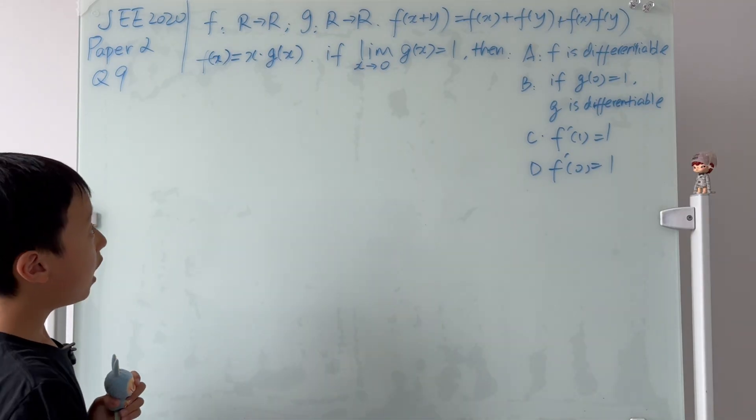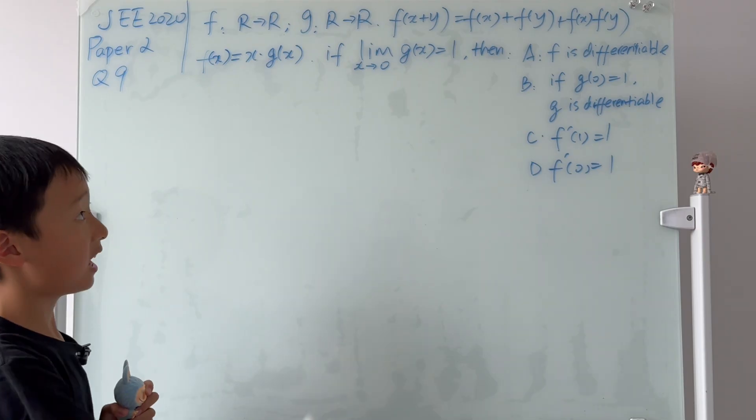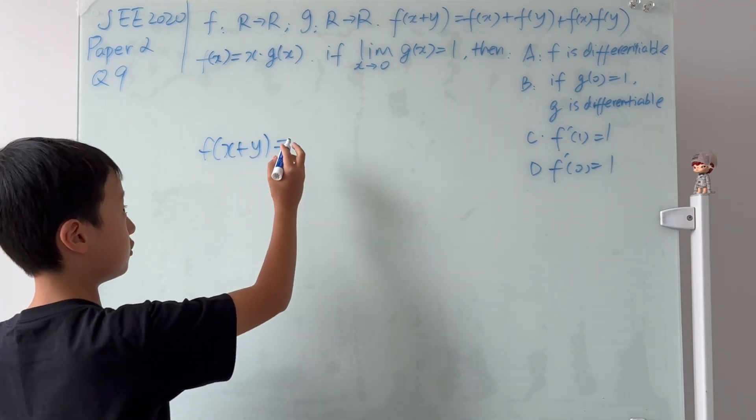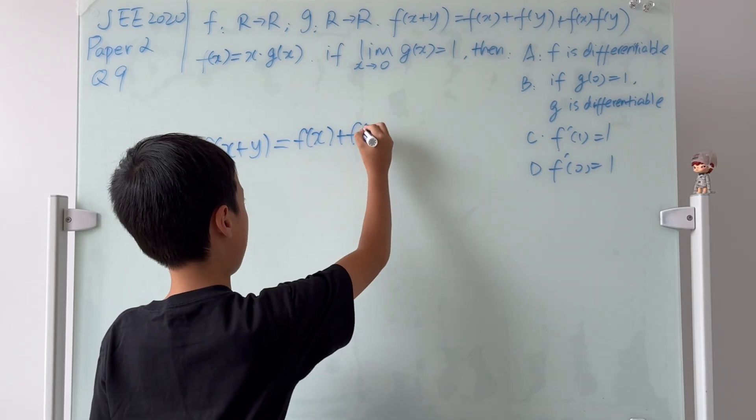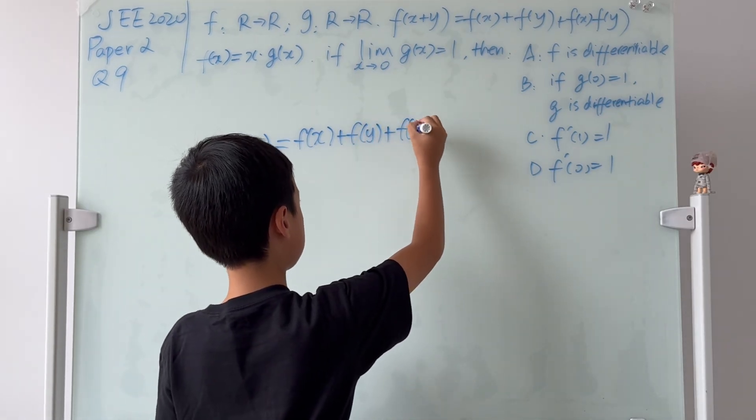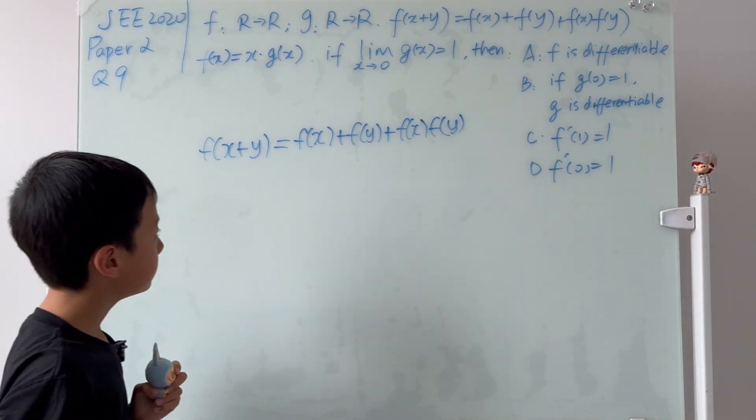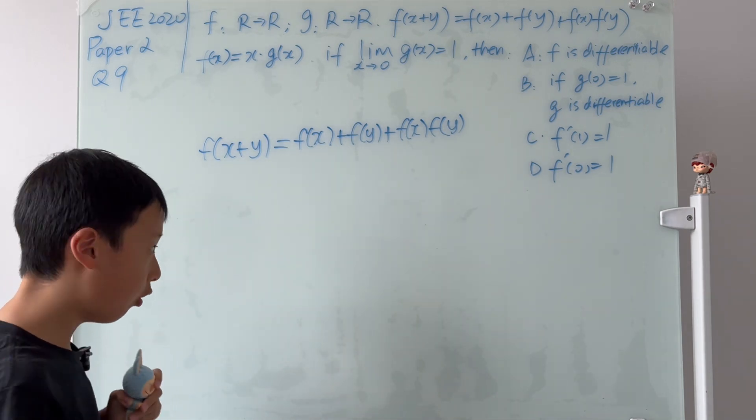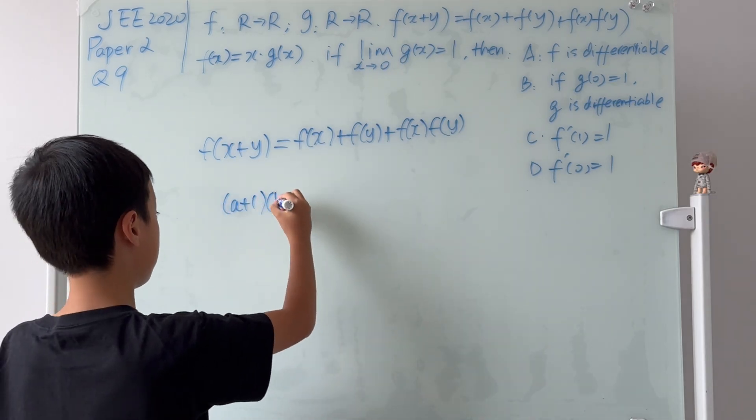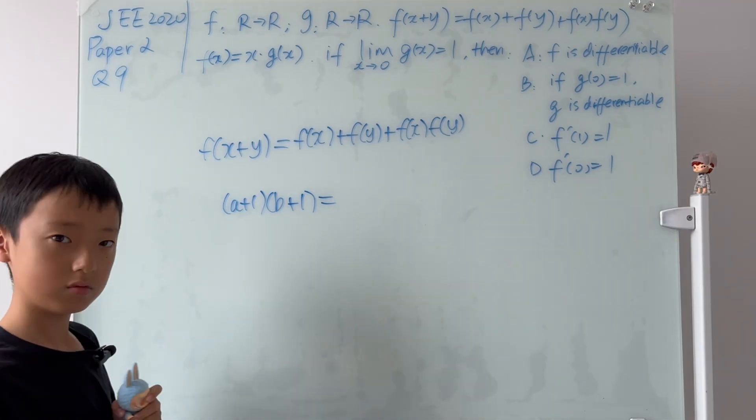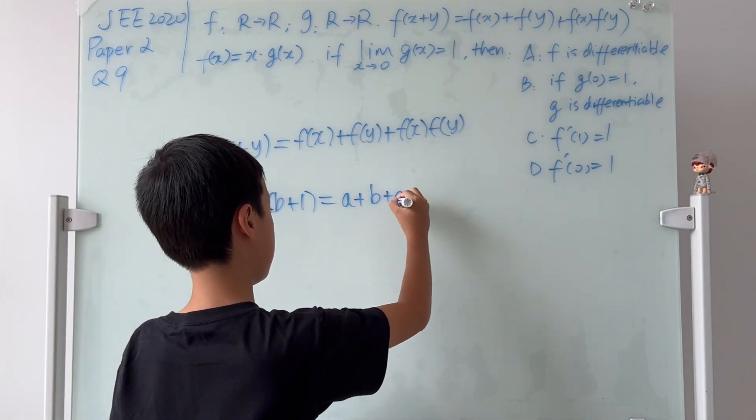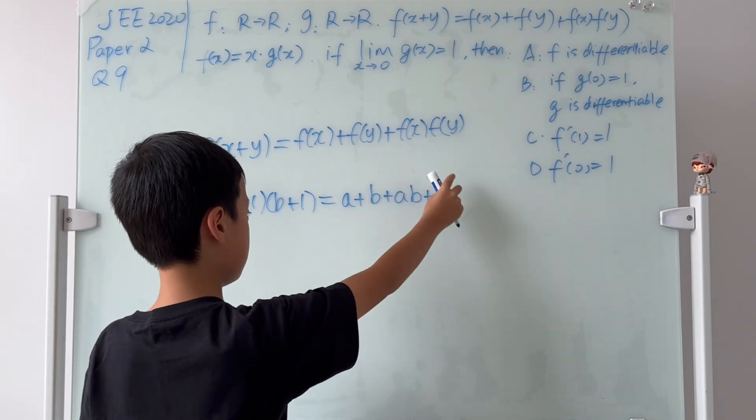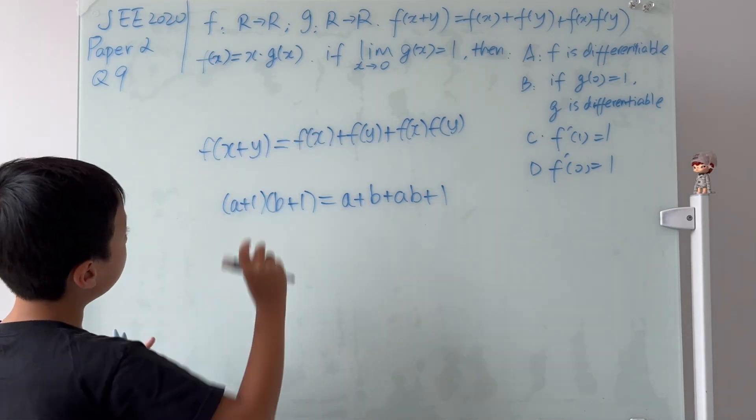I'm just going to rewrite that property. So it says that f(x+y) is equal to f(x) plus f(y) plus f(x) multiplied by f(y). Now, what does the right hand side look like? Well, if we recall, we know that (a+1) multiplied by (b+1) is equal to a plus b plus ab plus 1. There's no 1 here, but that's easy. Just add a 1 on both sides.